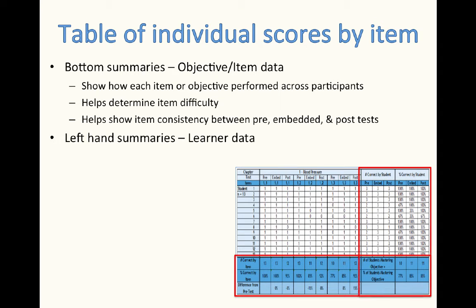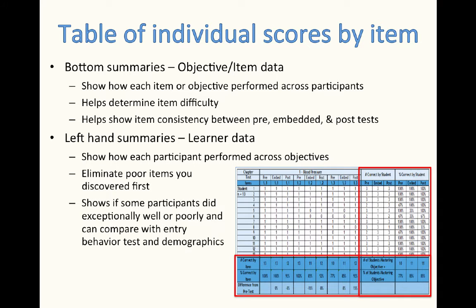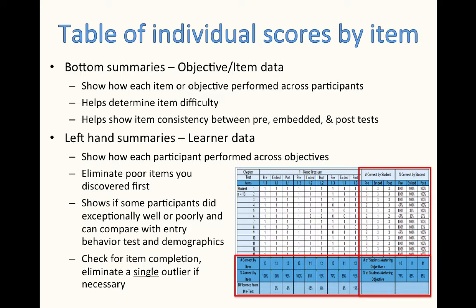Your left-hand summaries give you the learner data — it shows how each participant performed across objectives. Make sure that you eliminate any poor items you discovered from your first analysis of the bottom summaries. It shows if some participants did exceptionally well or poorly, and this can be compared with your entry behavior test and your demographics. Check the item completion and you may eliminate a single outlier if necessary. An outlier is somebody who did extremely well or extremely poorly and doesn't seem to be part of your target population. You can only have one, though. If you have more than one, they may be part of your population, and if you have one at the high end and one at the low end, they cancel each other out.